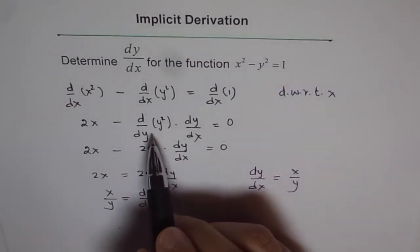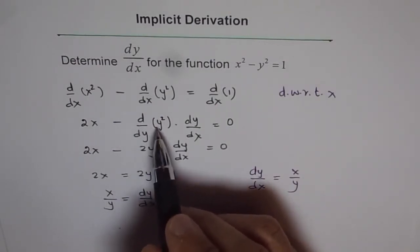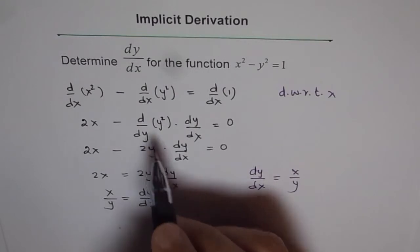Second, wherever we have a variable which is not x, then we need to use the chain rule.